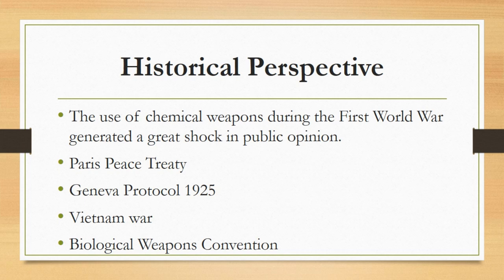It was possible to separate the question of biological weapons, which became the object of a special treaty in 1972. Yet the negotiations on chemical weapons lasted for more than 20 years, the major stumbling block being a compliance system which had to be effective on the one hand but not too intrusive on the other. The final success of these negotiations was the adoption of the Chemical Weapons Convention in 1992, which entered into force in 1997.